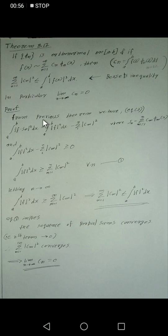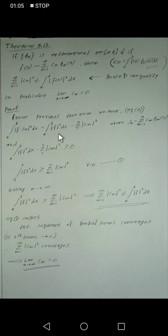We will see the equation. The equation: ∫ from a to b of |f − sₙ|² dx equals ∫ from a to b of |f|² dx minus σ from n=1 to infinity of cₙ², where sₙ = σ from n=1 to infinity of cₙψₙ(x).